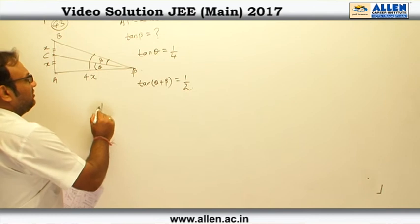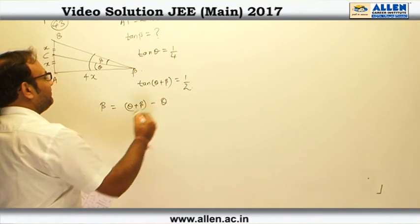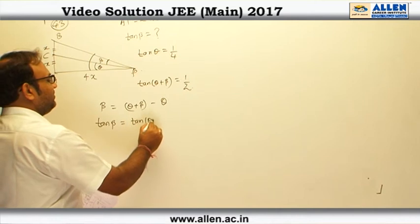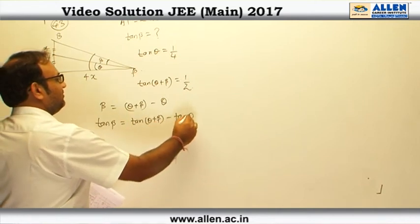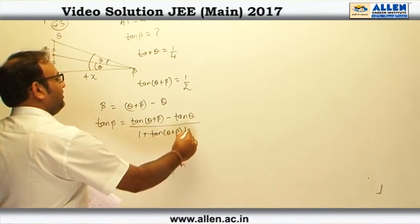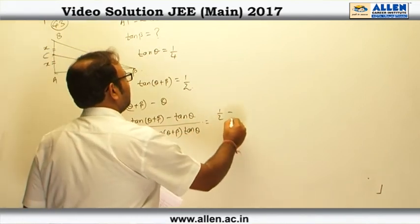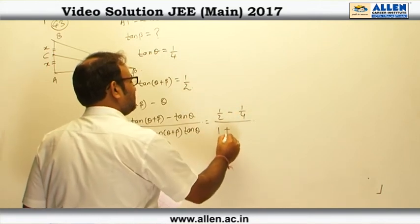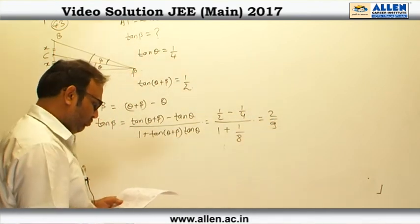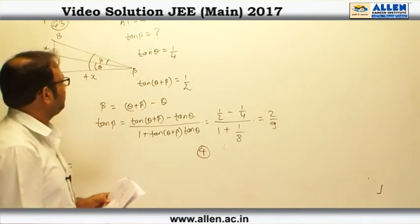To get tan(beta), we note that tan(theta) = 1/4, and tan(theta + beta) = 1/2. Since beta = (theta + beta) - theta, taking tan on both sides: tan(beta) = [tan(theta+beta) - tan(theta)] / [1 + tan(theta+beta)·tan(theta)] = (1/2 - 1/4) / (1 + 1/8) = 2/9. So option number 4 is correct.